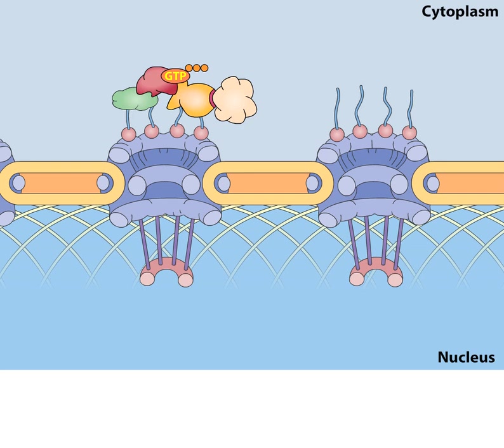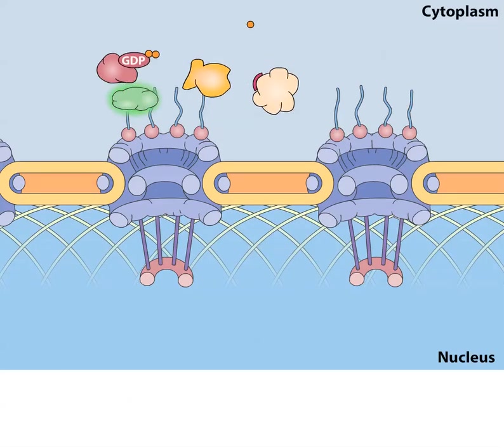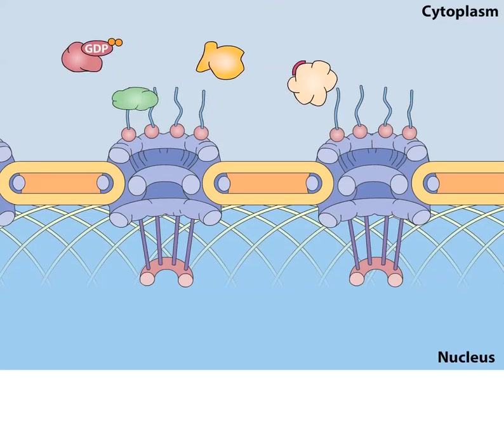Following transport to the cytosolic side of the nuclear envelope, GTP hydrolysis and release of RAN-GDP leads to dissociation of the cargo protein, which is released into the cytoplasm.